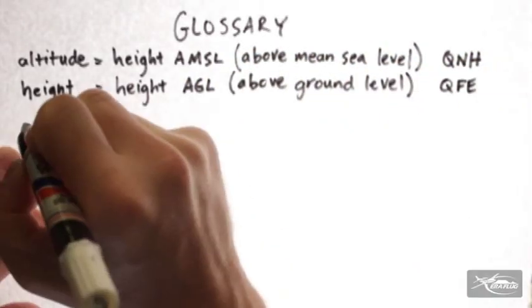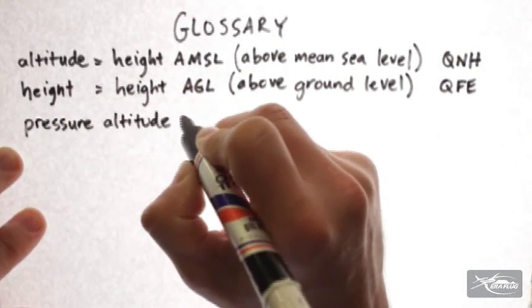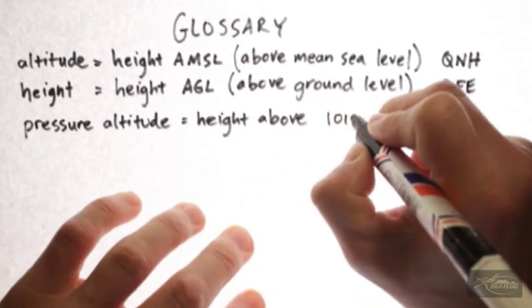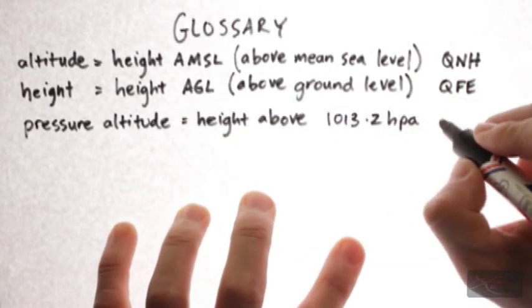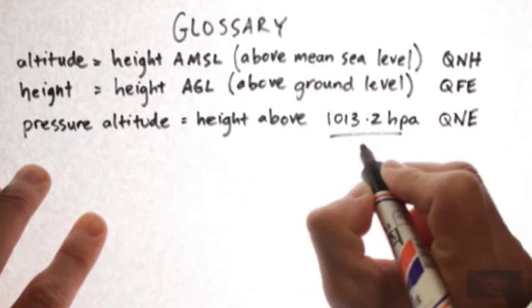The third one is the pressure altitude. Pressure is measured in terms of hectopascals, and they are replacing the old measurement, which was millibars. Pressure altitude is the height above the 1013.2 hectopascal pressure line. For ease of explanation, we are just going to refer to it as 1013 hectopascals, and we'll even drop the hectopascal. The Q-Code reference for 1013 is QNE.